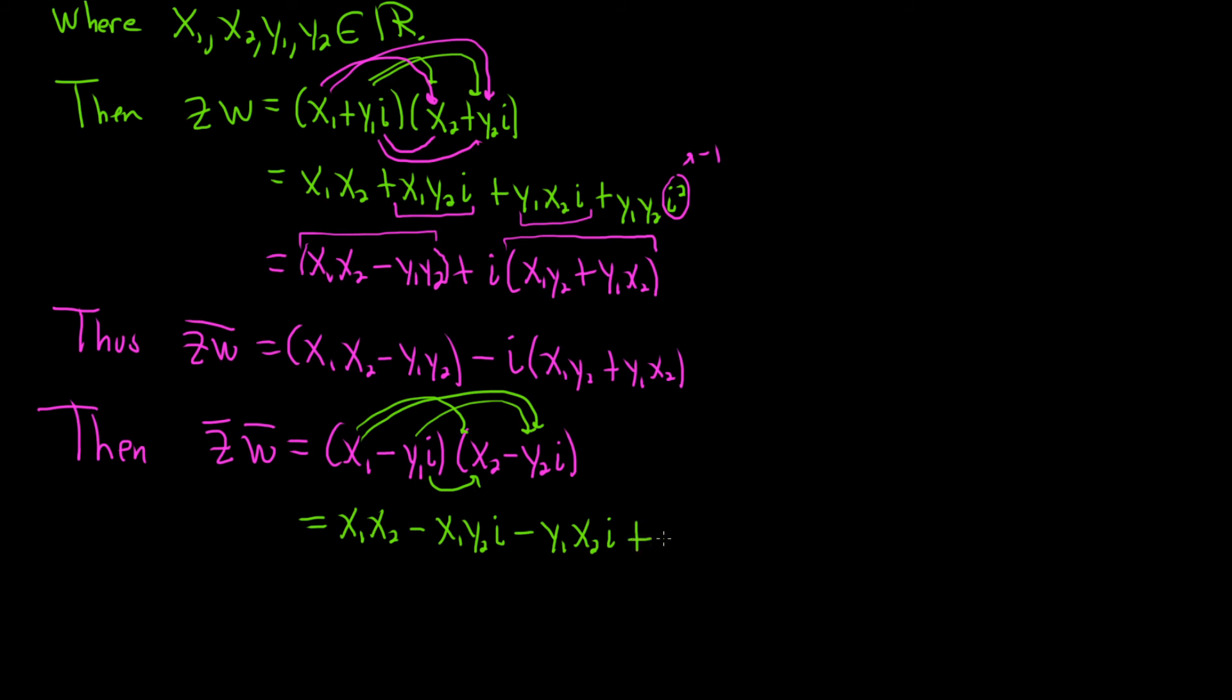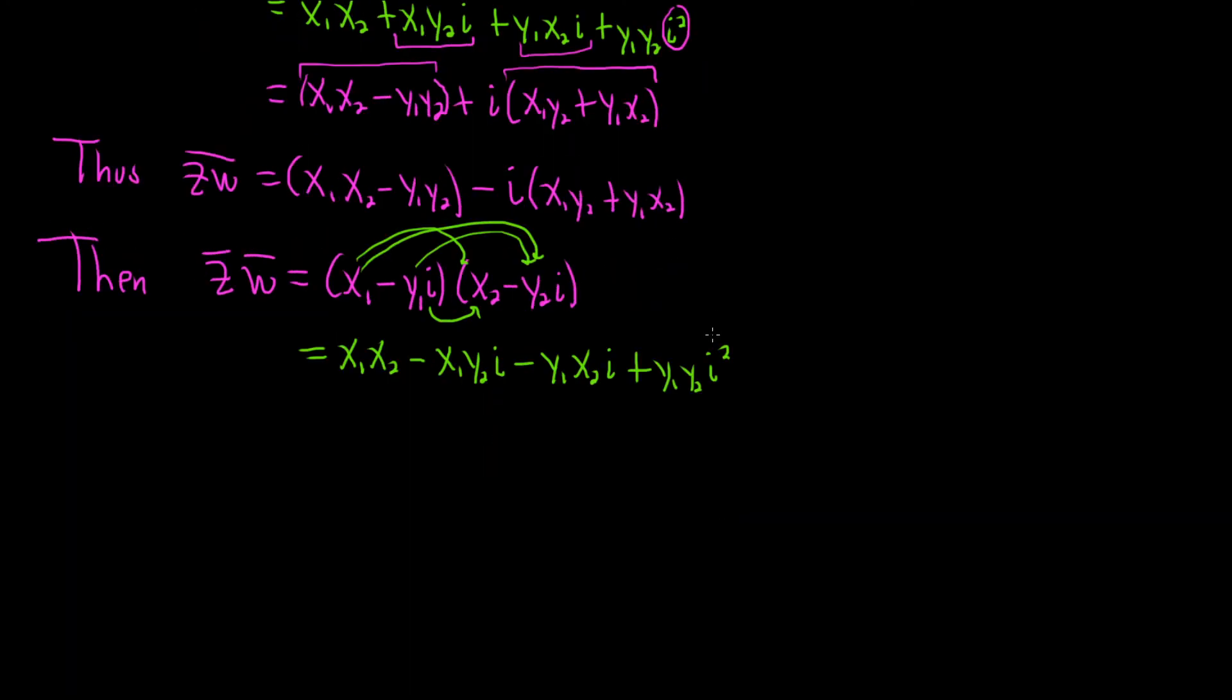Minus and minus is plus. And then we have y1y2, and then the i is being squared. As before, we know that i squared is negative 1. So, this will become x1x2. I'll go ahead and put that term next. Minus y1y2. And then it looks like we can pull out a minus 1 from these terms here. So, minus times x1y2 plus y1x2. And then we have our i here.